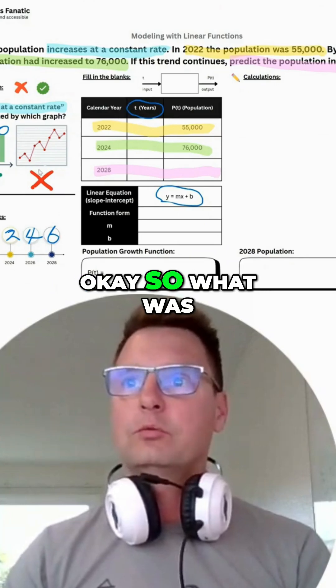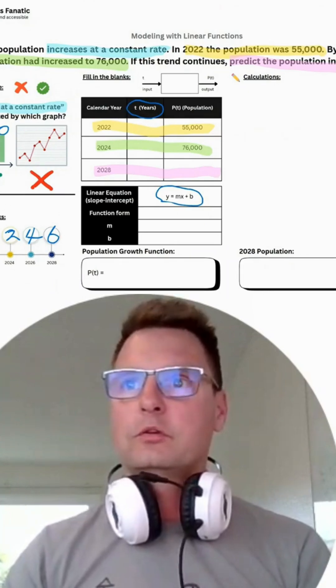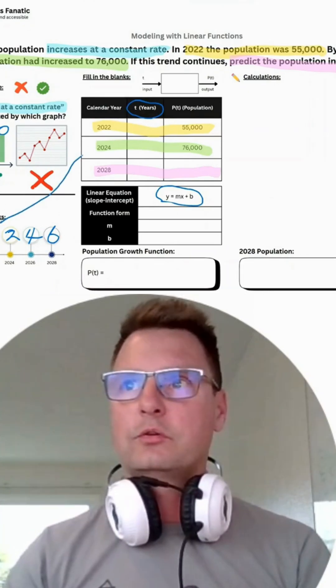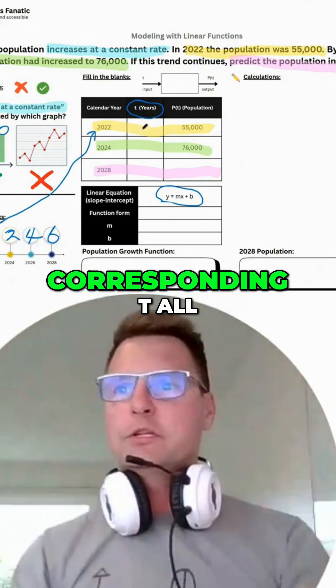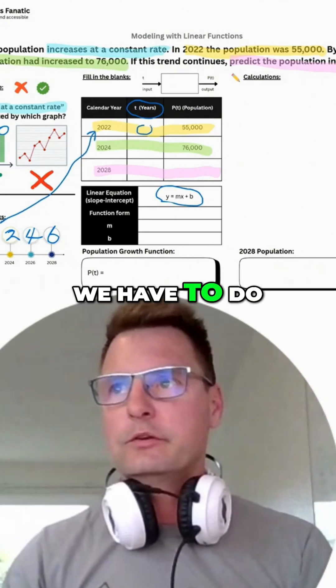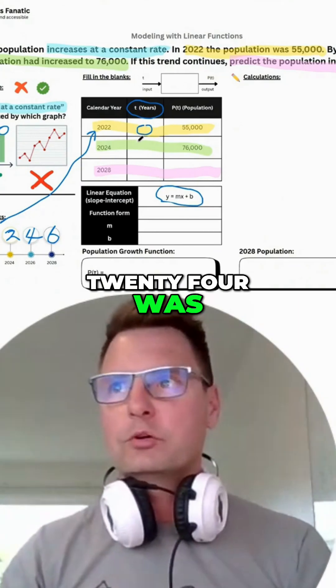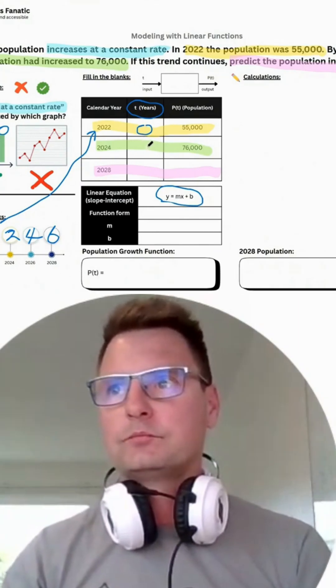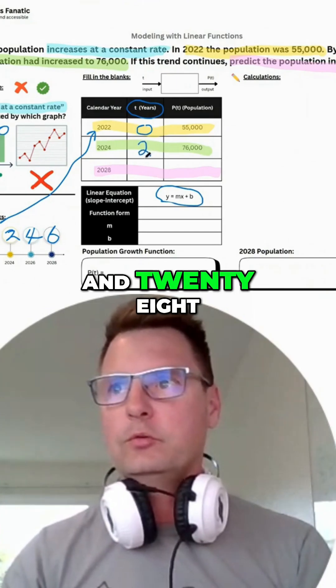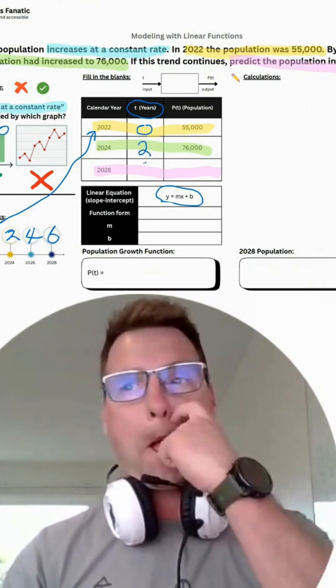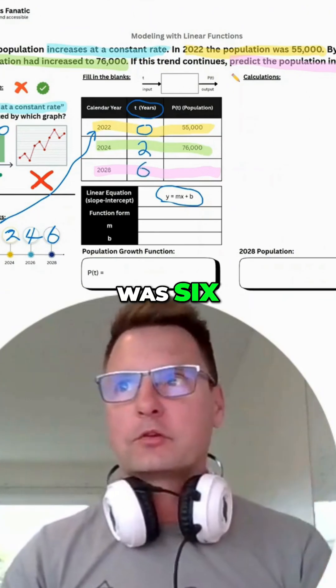Okay, so what was 2022? What is the corresponding t? All we have to do now is fill in. We have zero. 2024 was t equals two years, and 2028 was six, right?